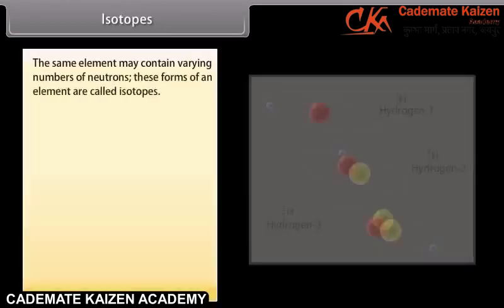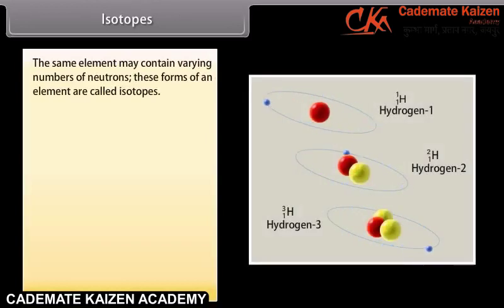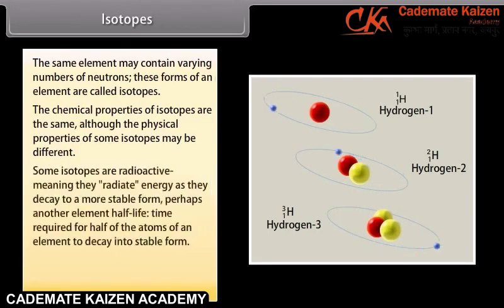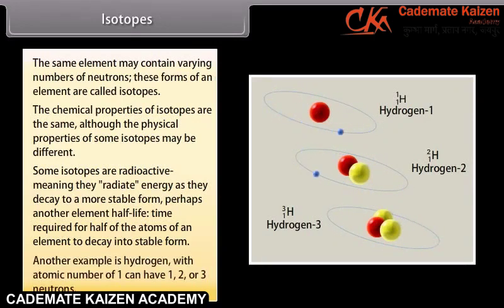Isotopes. The same element may contain varying numbers of neutrons. These forms of an element are called isotopes. The chemical properties of isotopes are the same, although the physical properties of some isotopes may be different. Some isotopes are radioactive, meaning they radiate energy as they decay to a more stable form, perhaps another element. Half-life is the time required for half of the atoms of an element to decay into stable form. For example, hydrogen with atomic number 1 can have 1, 2, or 3 neutrons.